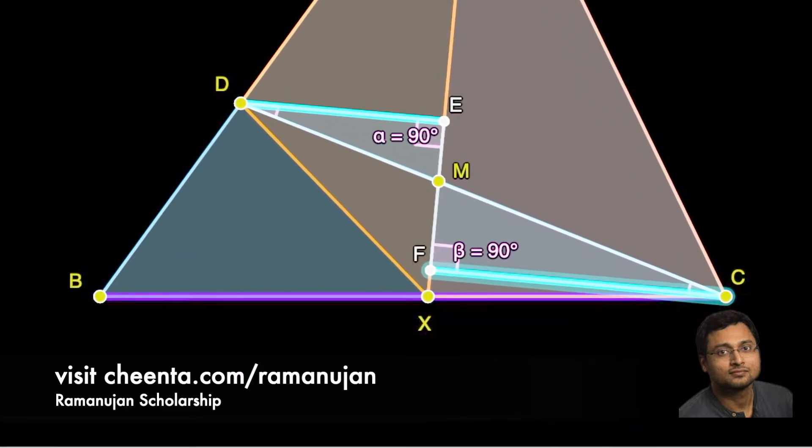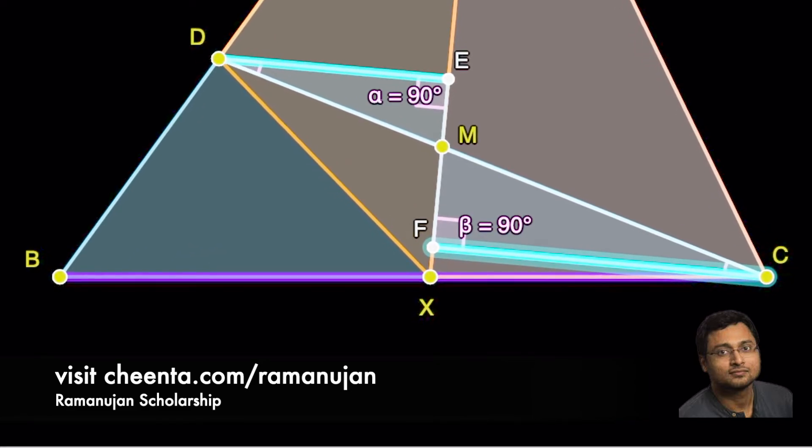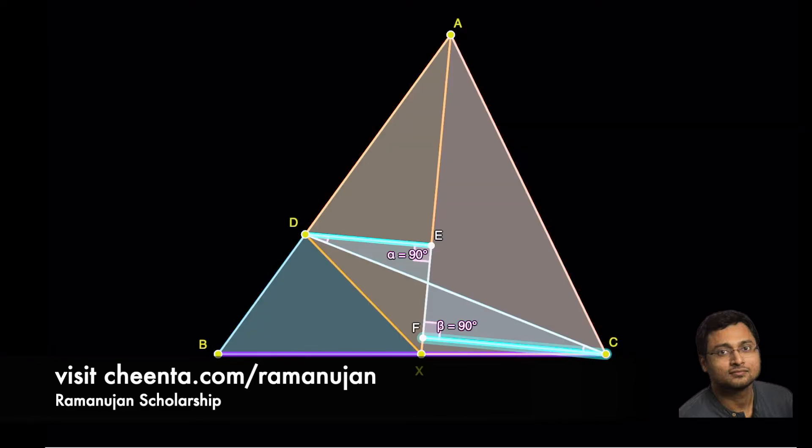So, clearly M is the midpoint of DC. Now, we have found the reverse engineering process completely. What we will do now is the following.